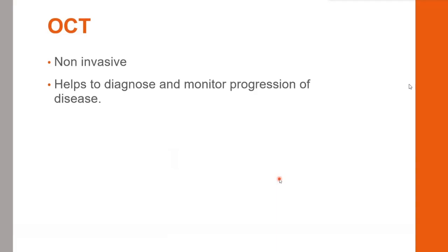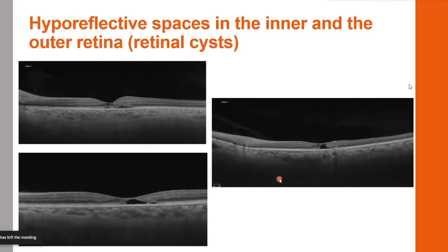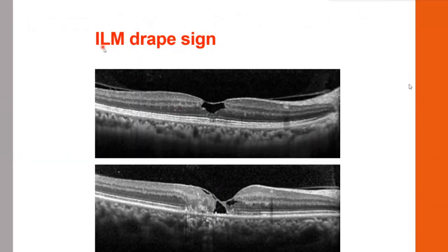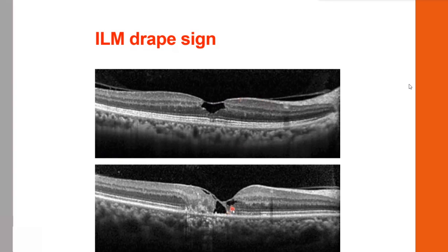For diagnosing MacTel, various multimodal imaging modalities are used. On OCT, a non-invasive tool useful for diagnosis and monitoring disease progression, hyperreflective spaces are seen in both inner and outer retina as retinal cysts. At the foveola, the inner lamellar cyst appears as a loss of tissue with the ILM spanning across it — called the ILM drape sign. Pigments in MacTel appear as hyperreflective lesions casting posterior shadowing.